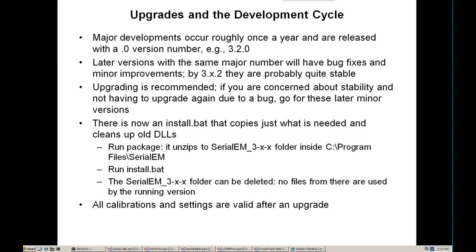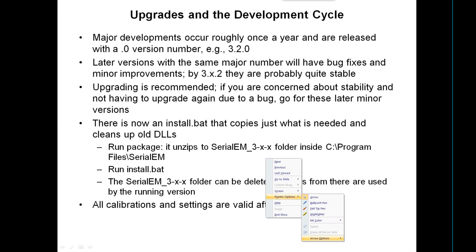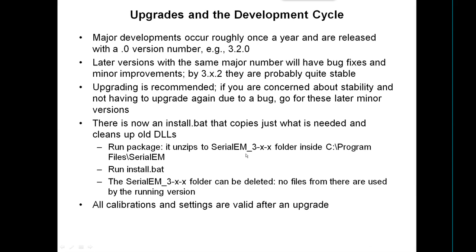To upgrade, it's simply a matter of getting the package and running it. It will unzip to a folder named by the version name that's inside the program files 0AM folder. You go into that folder and find install.bat, click on it, and it will take care of copying all the stuff up to the upper directory. At that point, this folder and any other ones like that can be deleted — there are no files from there that are used by the running version.